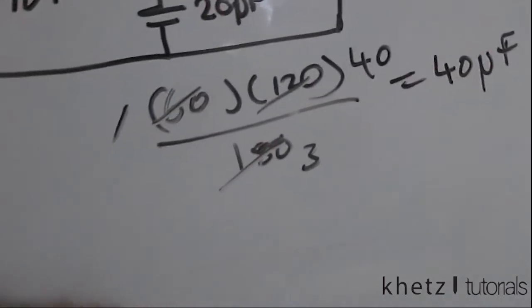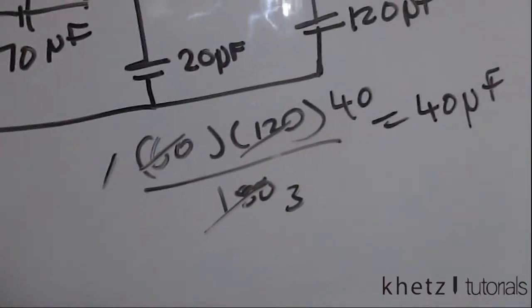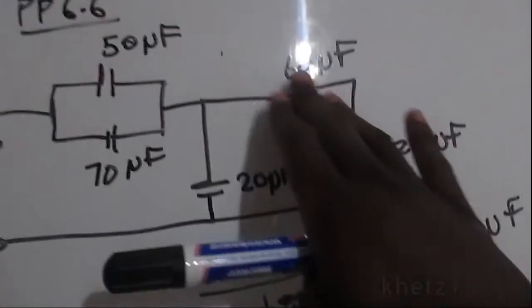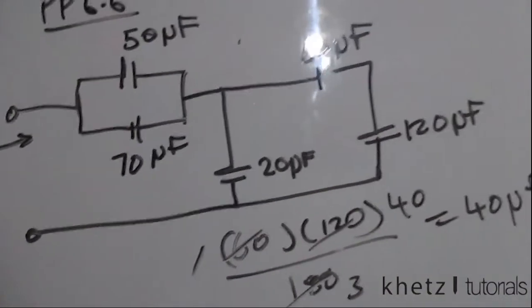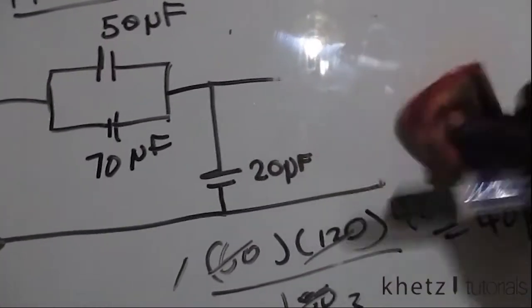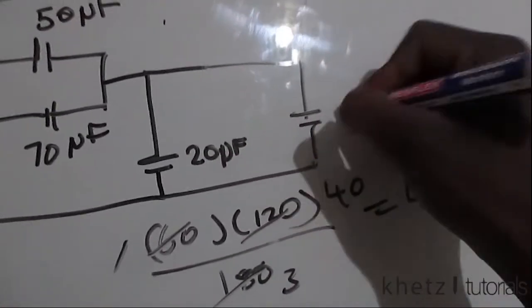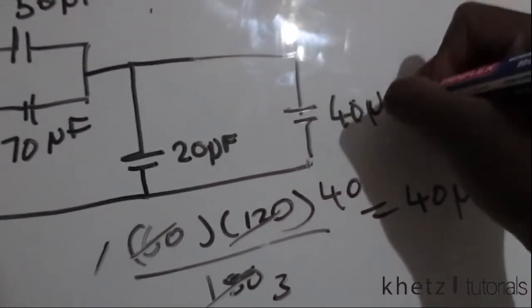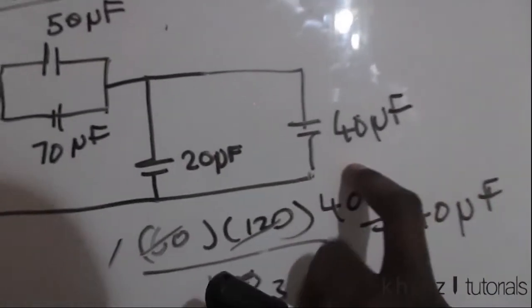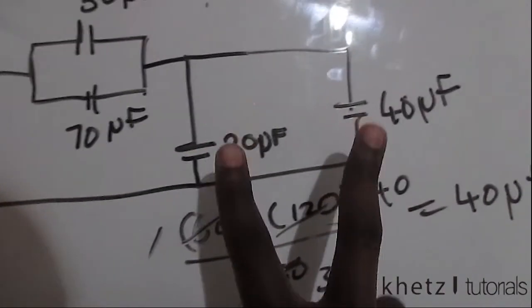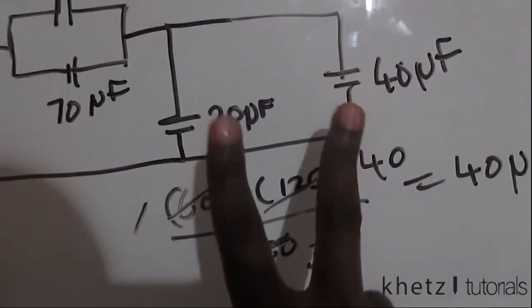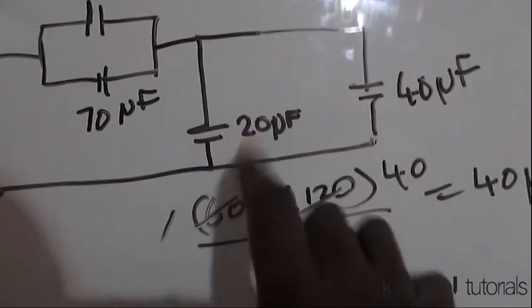So now this 40 microfarads is at this point. We can erase this. Let's use the same circuit. It replaces that because it's the equivalent at that point. So you have 40 microfarads at that point. Now this is in parallel with that. And as I said, parallel capacitances, you actually add them up. So 40 plus 20 will give you 60.